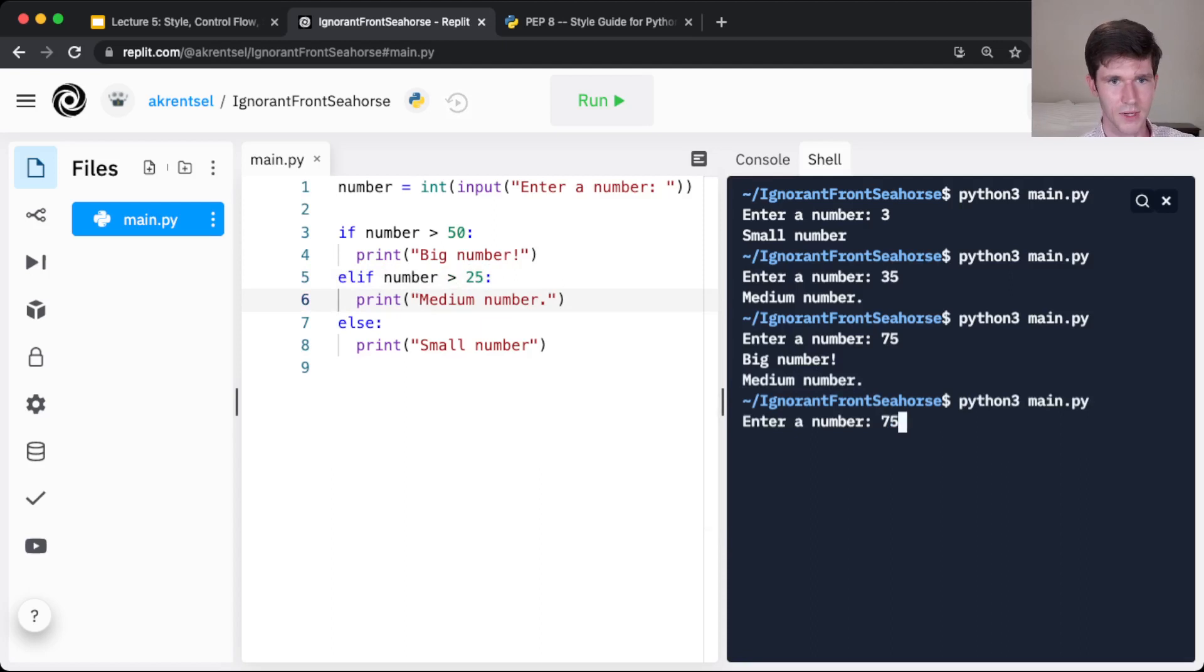And so this is the case where we want to use elif on this code. So if I do 75, only big number gets printed because an else if, elif, doesn't get checked if a previous condition in this set of conditionals was true. Just to show you, this still works for the medium number and the small number.